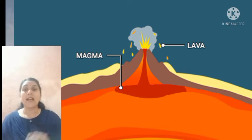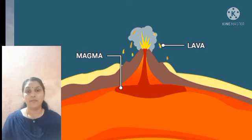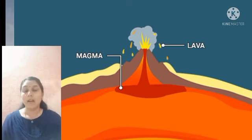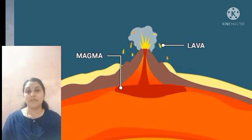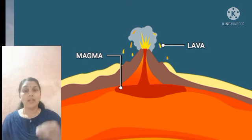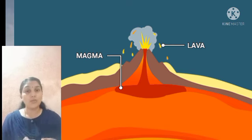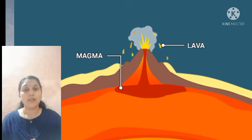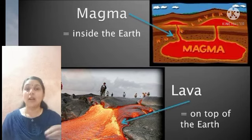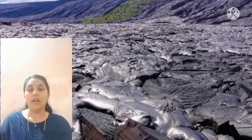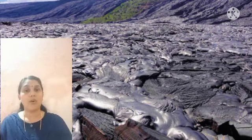Magma is the molten rock deep inside the earth. Sometimes this magma comes out of the earth's surface through the weakest part of the crust. At that time, the magma is known as lava. When magma comes out of the earth's surface it is called lava, and this lava cools down and changes back into solid rocks again.